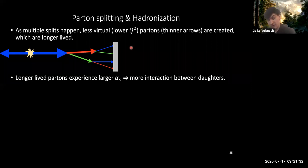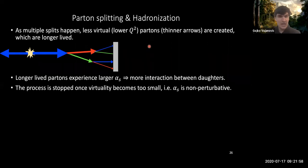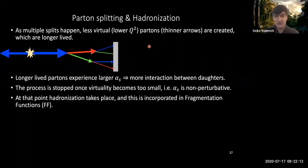Of course, the lower the virtuality is, the longer lived the parton is, and the larger the alpha_s that these later stage partons are going to experience. So therefore there's going to be more interactions between daughter partons, so these daughters among themselves and the daughters over here interacting with the daughters on the other side of these two parton initiating jets. And at some point, the alpha_s is essentially going to overcome any kind of splitting, and really you enter into a non-perturbative region where hadronization really is the thing that's going to happen. And hadronization, as I already mentioned, is essentially incorporated inside of these fragmentation functions.